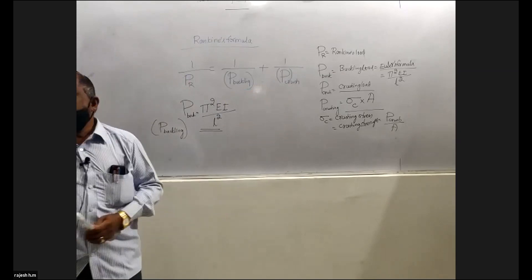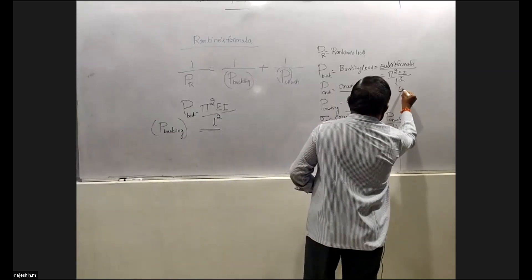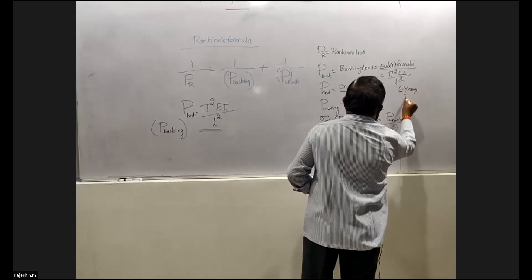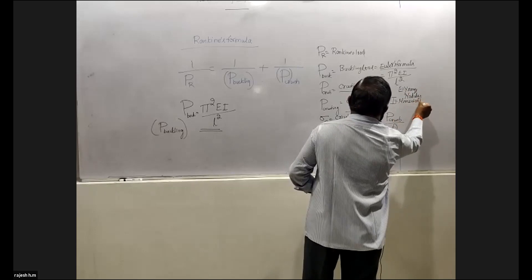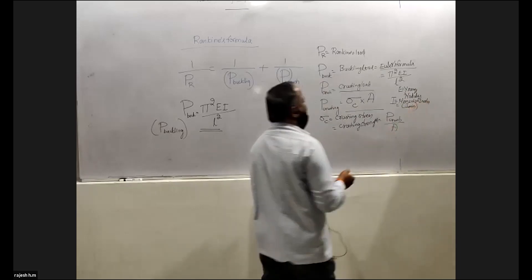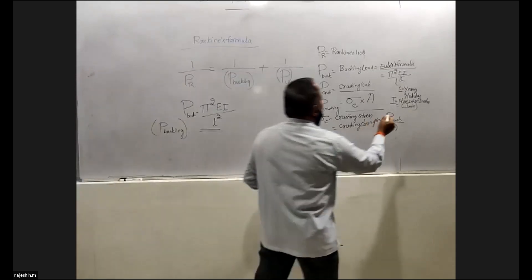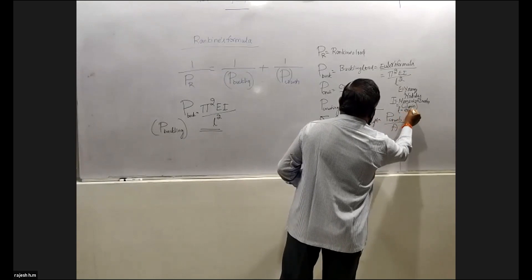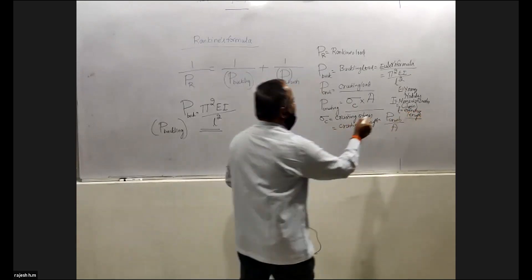Now one by one let me tell you: E is the modulus of elasticity. Looking at Euler's formula, the moment of inertia I should be the minimum moment of inertia — I minimum. L is the effective length; we already know L is equal to the effective length, sometimes using the symbol L_e.